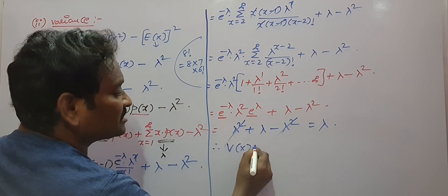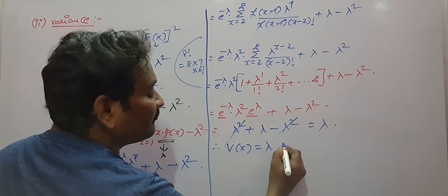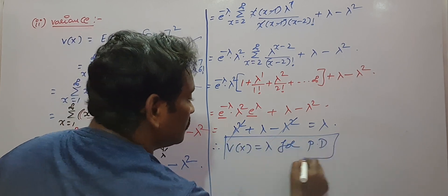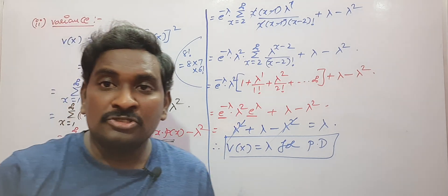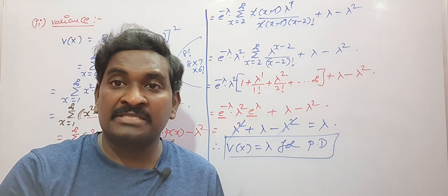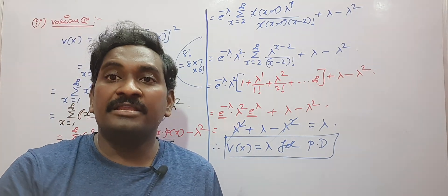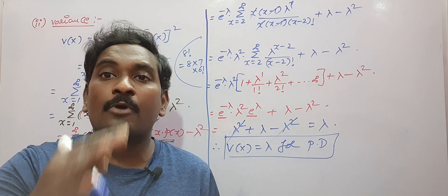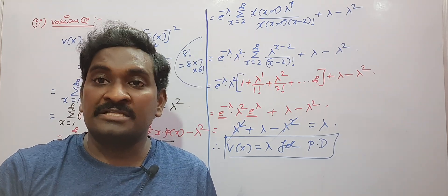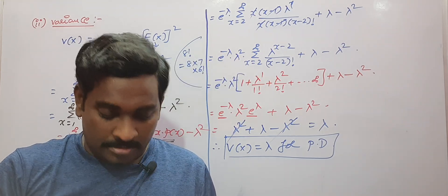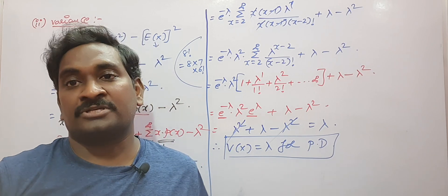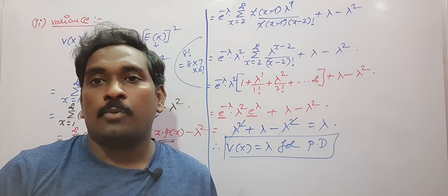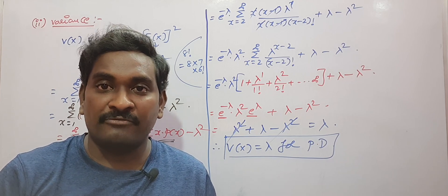We observe that for the Poisson distribution, mean and variance are both equal to λ. In your examination you may face the question: 'Show that mean and variance of Poisson distribution are equal.' In such cases, you should derive the entire solution shown here. In the next video I will give some examples on both Poisson distribution and binomial distribution. Thank you very much.